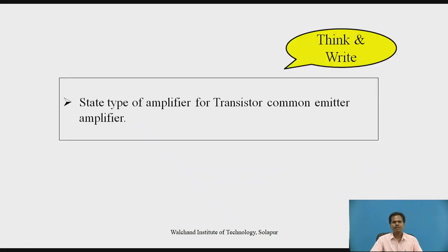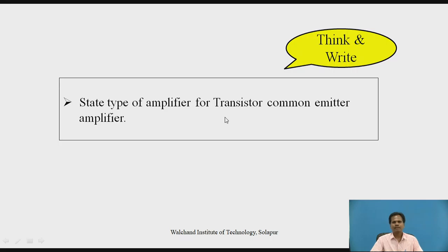Students can pause the video here and think about this question: state the type of amplifier for a transistor common emitter amplifier. For the transistor common emitter amplifier, the type of basic amplifier is a trans-resistance amplifier, because the input is a current signal and the output is a voltage signal. Since a transistor is a current-controlled device, it acts as a trans-resistance amplifier in the common emitter circuit configuration.